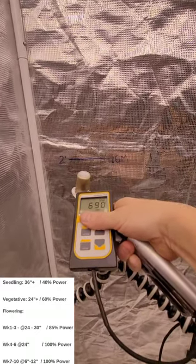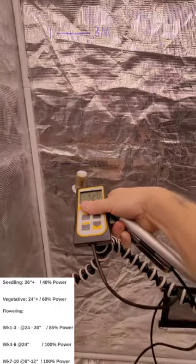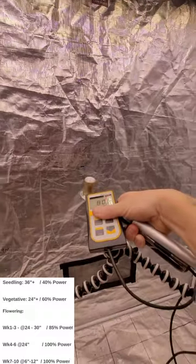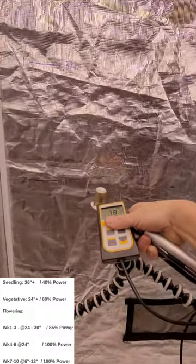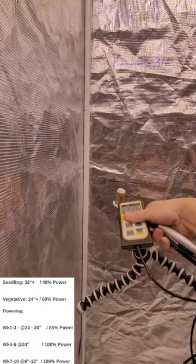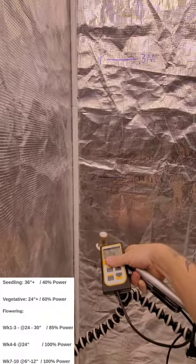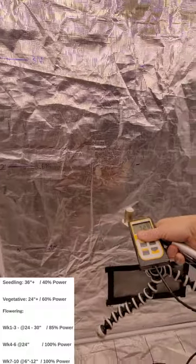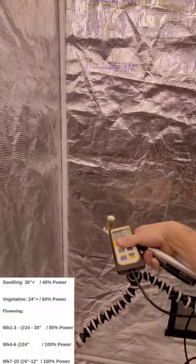So we're over here in the corner, 690. We want to have a really nice even 600, 700, maybe 800 PAR at the peak those first three weeks of flower. And that's what we're going to get at that 2-foot mark, and you can go as far as 2.5 feet away. We're still in the mid to high 600s there, even at 2.5 feet away, and that's at 85% on the dimmer.